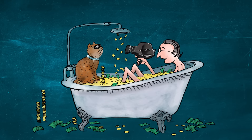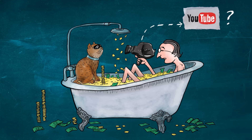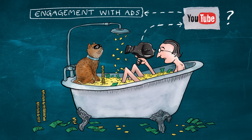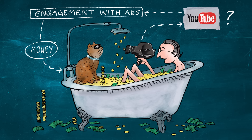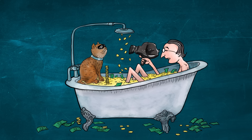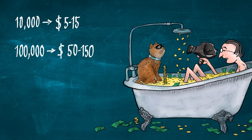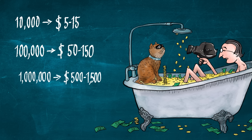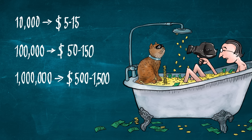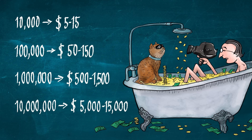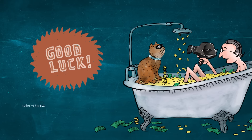Congratulations, you can now earn money from your YouTube videos. How many views does it take to make money on YouTube? You don't make money based on the amount of views — you make money based on people's engagement with the ad, meaning clicking or watching an ad for more than 30 seconds. As a rule of thumb: 1,000 views can make around $0.50 to $1.50; 10,000 views give around $5 to $15; 100,000 views give approximately $50 to $150; one million views would give $500 to $1,500; and 10 million views would give around $5,000 to $15,000. Good luck with your videos!